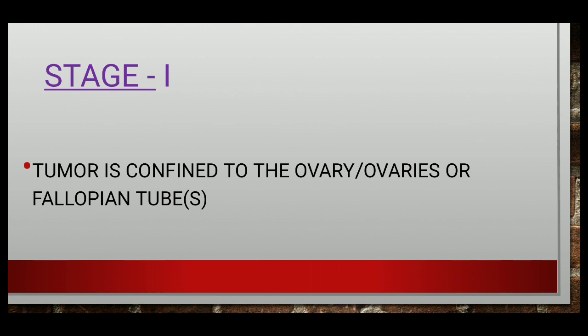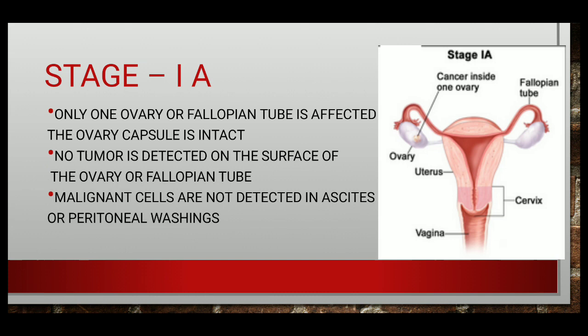We further divide stage 1 into stage 1a, stage 1b, and stage 1c. In stage 1a, only one ovary or fallopian tube is affected by the tumor. The ovary capsule is intact, no tumor is detected on the surface of the ovary or fallopian tube — the tumor is solely inside. Malignant cells are not detected in ascites or peritoneal washing.